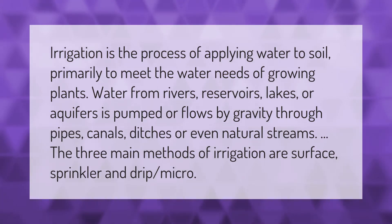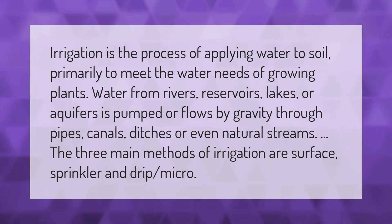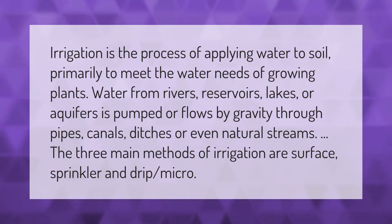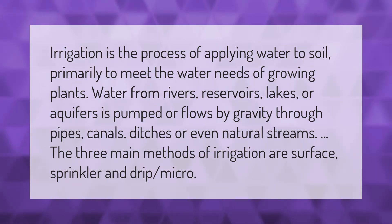Irrigation is the process of applying water to soil primarily to meet the water needs of growing plants. Water from rivers, reservoirs, lakes, or aquifers is pumped or flows by gravity through pipes, canals, ditches, or even natural streams.